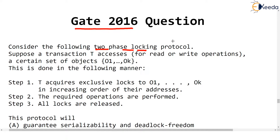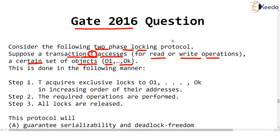Suppose a transaction T accesses — for read or write operation — a certain set of objects, or data items: O1, O2, O3, O4, up to Ok. These are the objects or data items and transaction T is going to access them for either reading or writing.